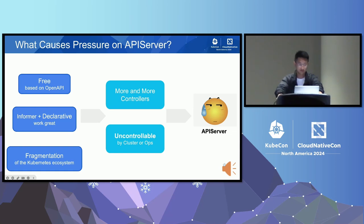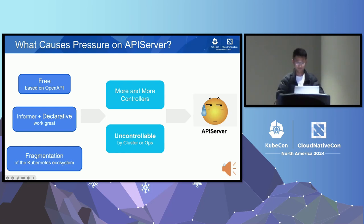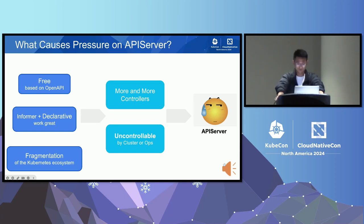When you are not using kubectl to control or view the cluster, can your API server rest? No. Who is constantly requesting your API server? It's the controllers. To describe what follows more simply, we will refer to all informer-based components as controllers. They drive the entire Kubernetes declarative resources — for example, your scheduler, controller manager, kube-proxy, and so on.